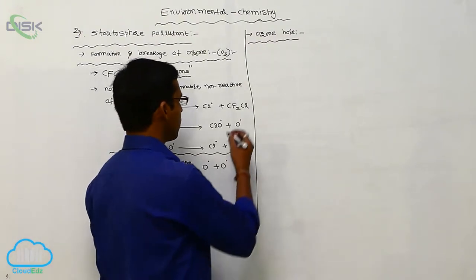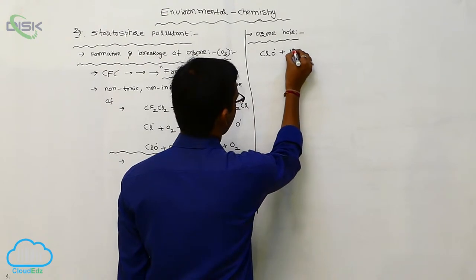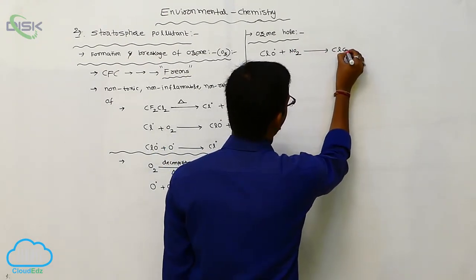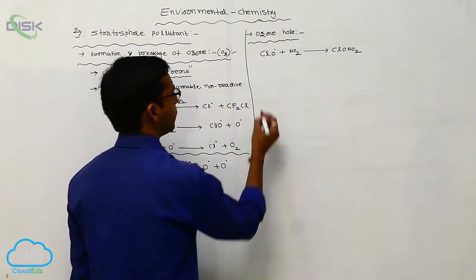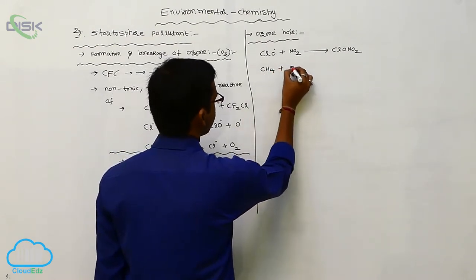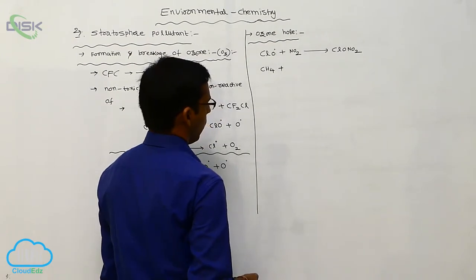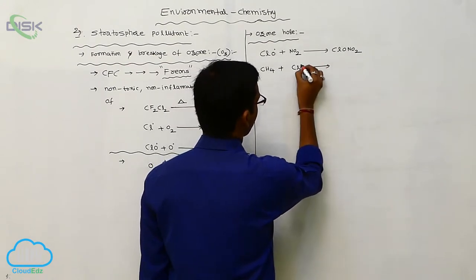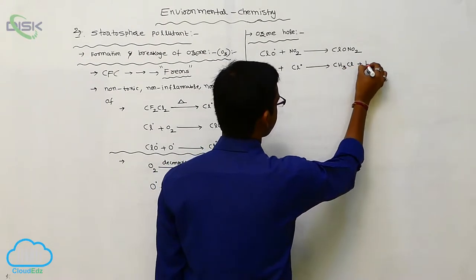Now see, this chlorine oxide ClO is reacted with nitrogen dioxide, forms ClONO2. Whenever methane is reacted with ozone or chlorine radical, it is reacted with a chlorine radical, it gives methyl chloride plus HCl.